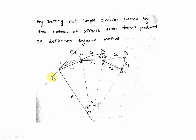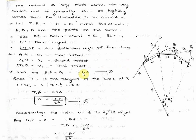In this method we produce the chord first. Starting with the known angle delta, we produce the second chord, extend it, find O2 and delta, then extend the next chord to find C3, and so on. This method is very useful for long curves and is generally used in highway curves, especially when a theodolite is not available.